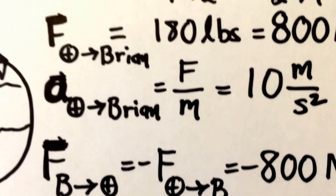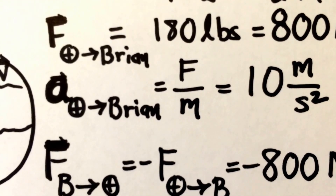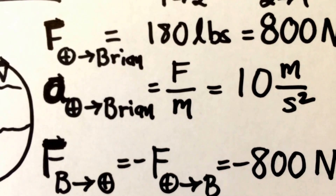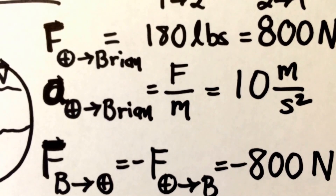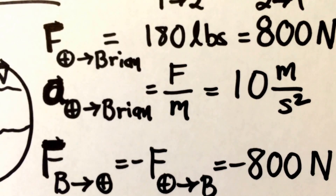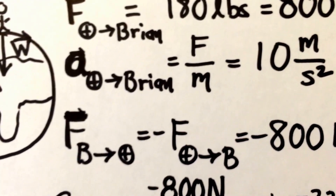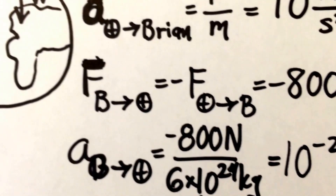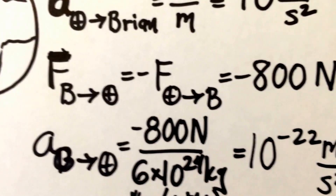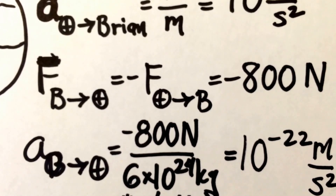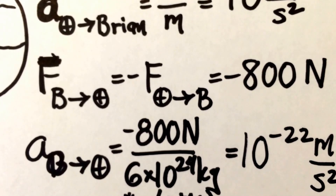The force that the Earth exerts on me is exactly equal and opposite to the force that I exert gravitationally on the Earth. So just as the Earth pulls me down with 800 Newtons of force, I pull up on the Earth with 800 Newtons of force. But because the Earth is so much more massive, the acceleration that results from my gravitational pull on the Earth is really tiny.